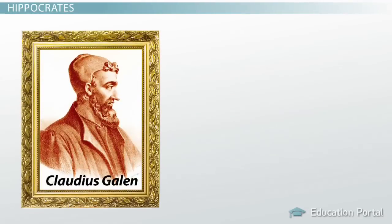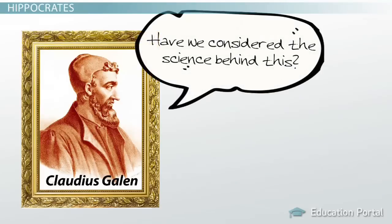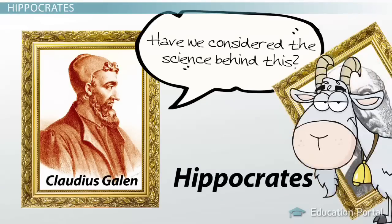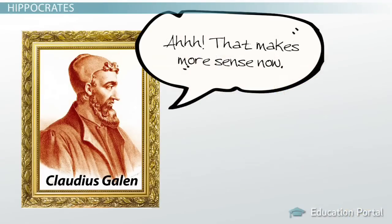Years later, a Roman named Claudius Galen became the first person to incorporate scientific investigation into the idea of mental illness. He took Hippocrates' ideas and experimented on animals to confirm and discover more about the biological underpinnings of abnormality.